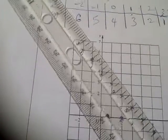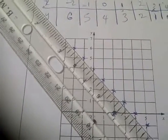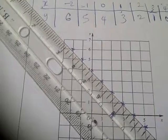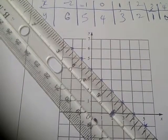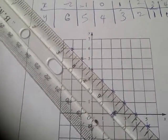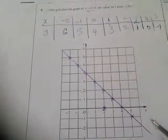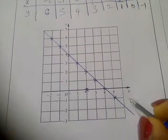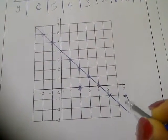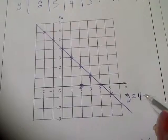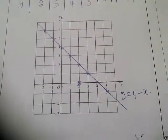So to do that, we just have to draw the graph. It will be a straight line graph — join the points. So this is the graph of y equals 4 minus x.